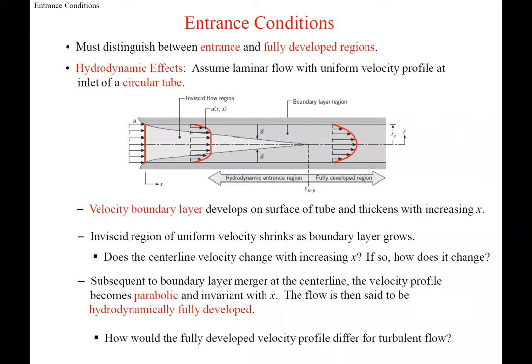So we're going to start off with some of the knowledge you would have from fluids. We have these different regions. We have entrance conditions. So if we start with a uniform temperature or uniform velocity profile, and then as soon as you start entering that internal pipe, the boundary layer starts growing — all around this pipe, growing in cross-section — and then all of a sudden it meets. And we have our length for fully developed.